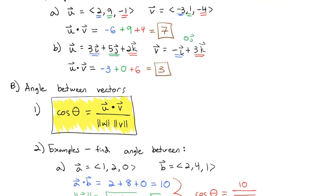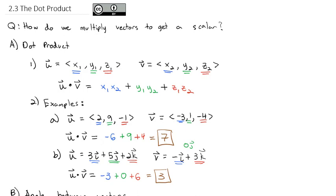In this video, we've taken a quick look at the dot product — a way to multiply two vectors together to end up with a scalar — and how it's commonly used to find the angle between two vectors. Go ahead and take a look at the homework assignment to practice these. In our next video, we'll look at how we can multiply vectors together to get a vector. We'll see you in class.